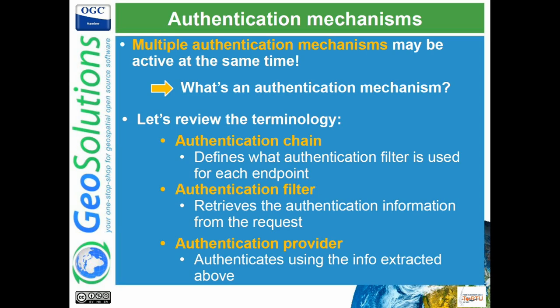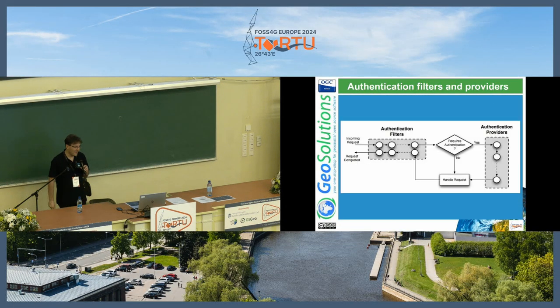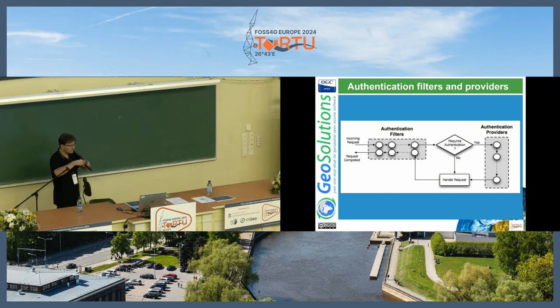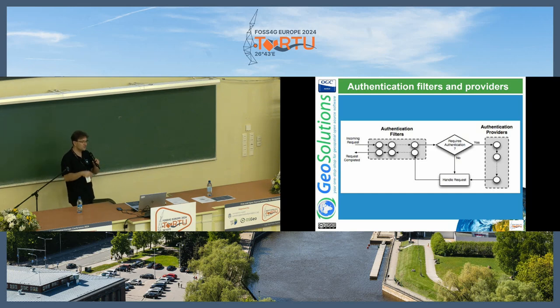That list of authentication mechanisms attached to a path we call an authentication chain, which is made of authentication filters, which can use authentication providers. When a request comes in, it goes through the authentication filters that decide how the request is trying to authenticate itself — form, basic authentication, digest, is there a JWT token in the request, and so on. You might have multiple ways: is there a remember-me cookie, is there a server-side session? These filters try to figure out how you are trying to authenticate.